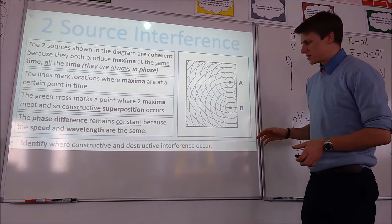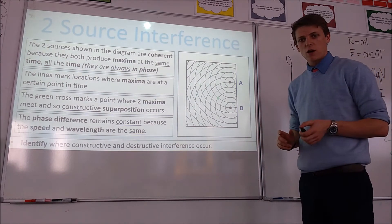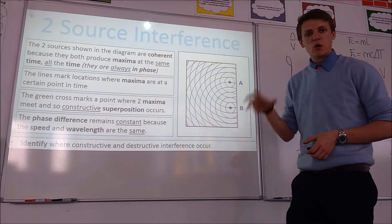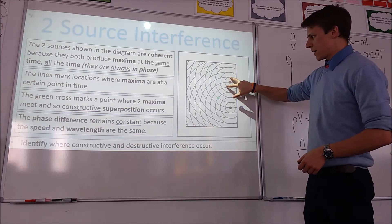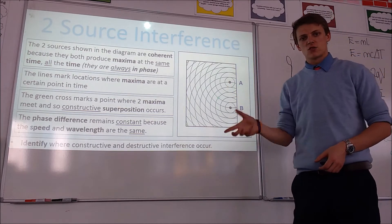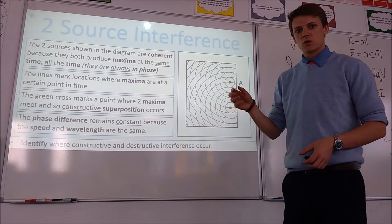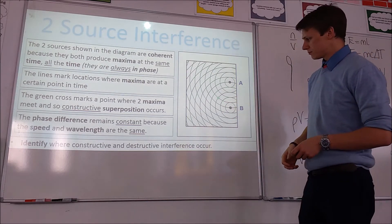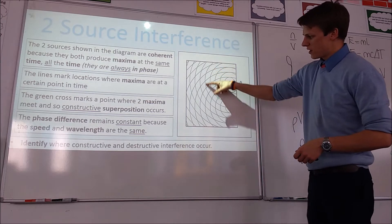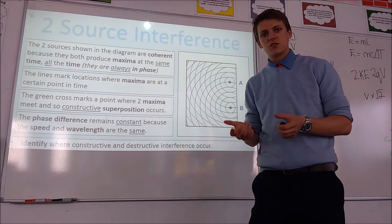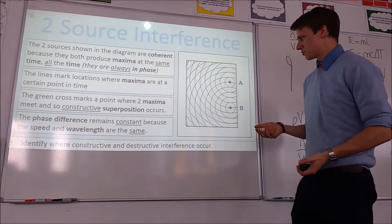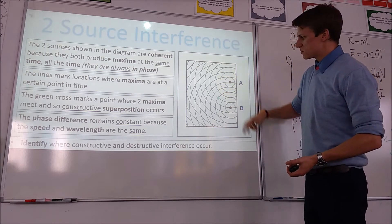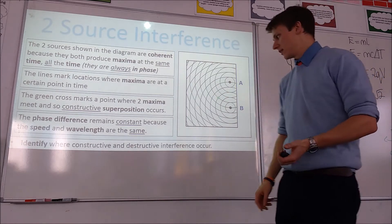We've got two sources of waves here — source A and source B — and they're both point sources, which means they produce waves that go out in circles around them, like dropping a pebble in water where you get ripples going out in all directions. The lines on the diagram mark the positions of maximum displacement of the wave, and halfway between these lines is where you would find minimum displacement.